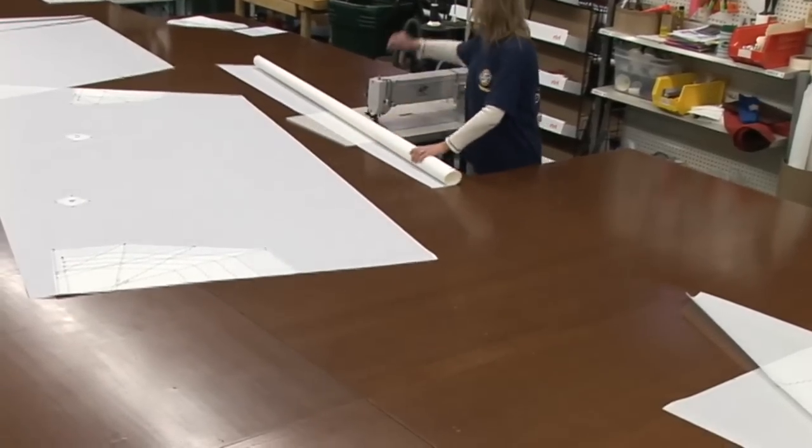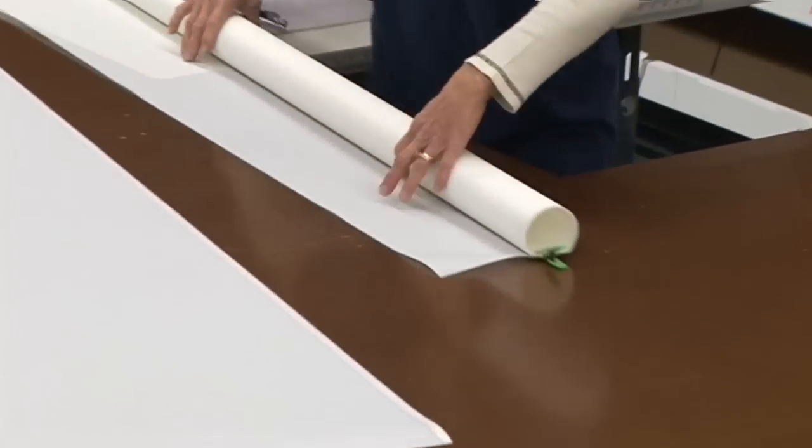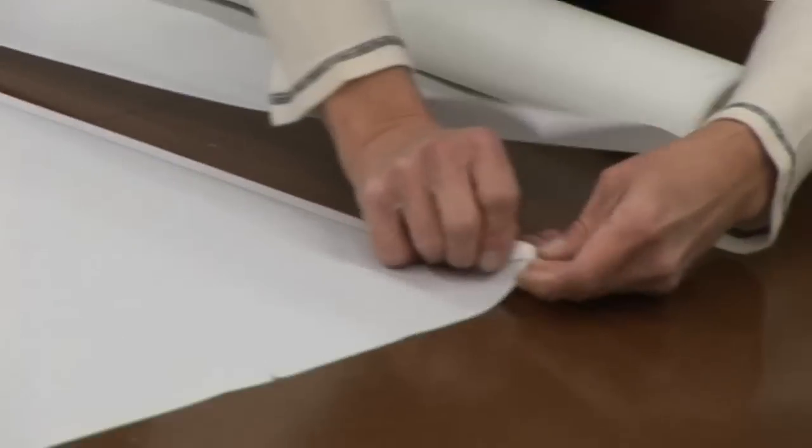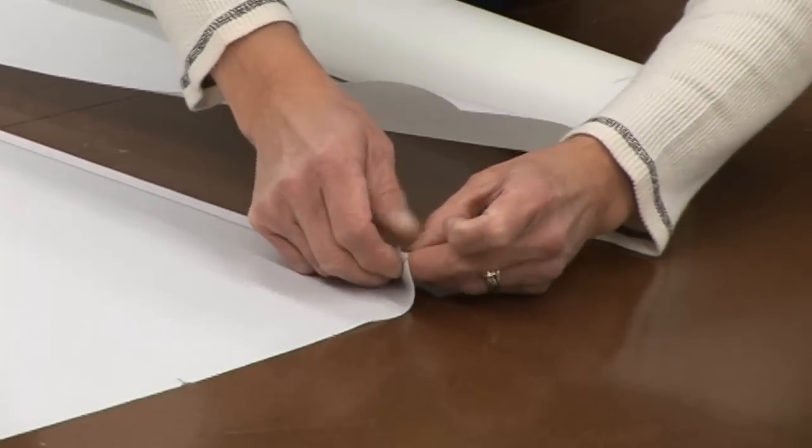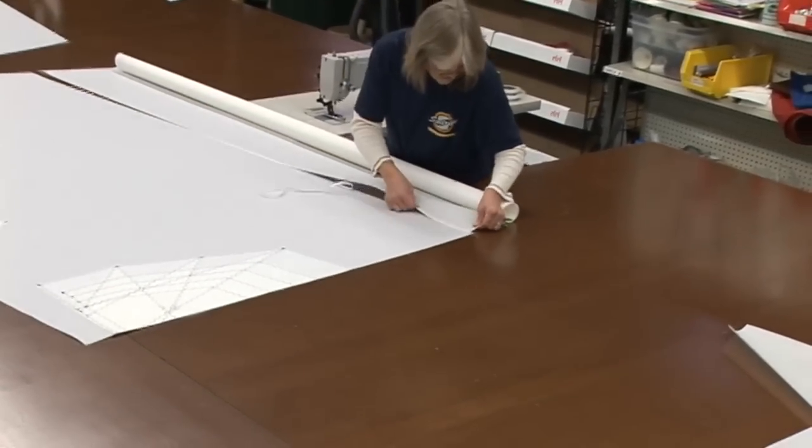Notice how she scrolls the material tightly to get it through the sewing machine. She uses a pony clamp to hold the scroll together. Then we'll just simply reveal the glue and baste these panels together as we did previously.